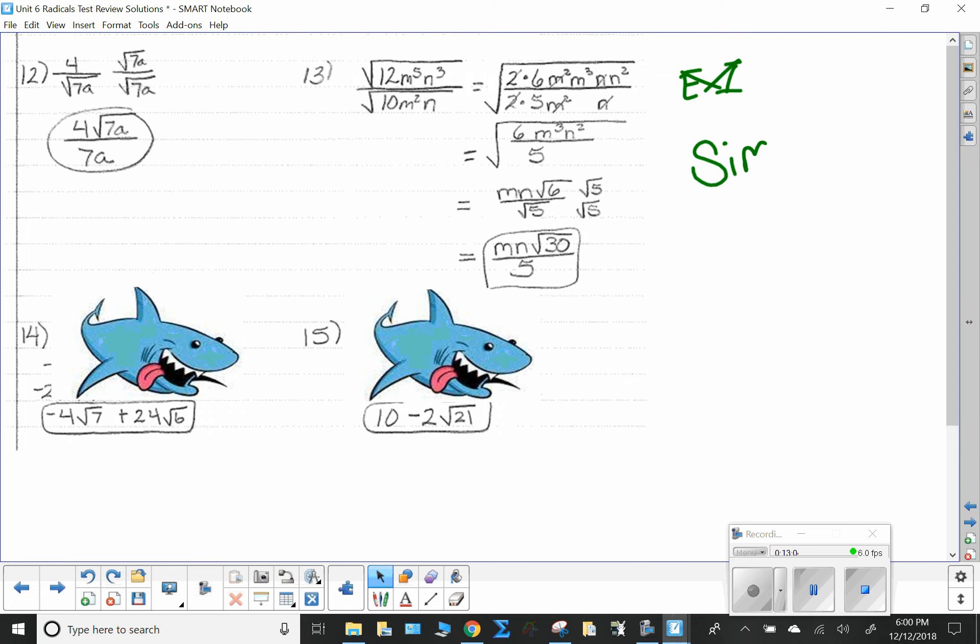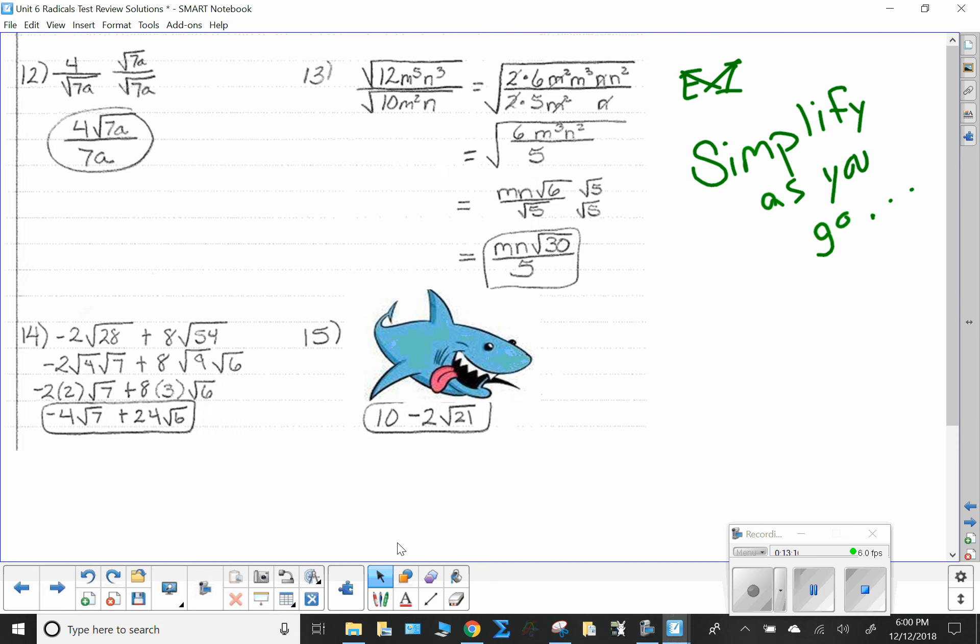Sometimes it's nice if you simplify as you go. Number 14. I can't do anything with root 28 and root 54. They're not like radicals, so I can't combine them. But, wait. Can I simplify them both? Yes, I can. So, if I simplify the square root of 28 to 2 root 7, and I simplify the square root of 54 to 3 root 6. That leaves me with negative 4 root 7 and 24 root 6. Still, not like radicals, still can't combine. But, they are smaller numbers and it's simplified.